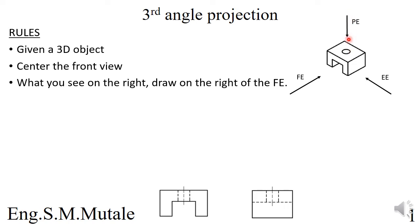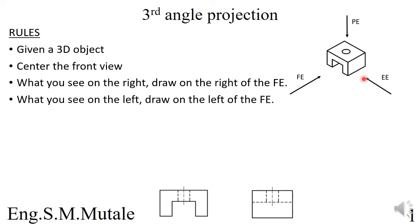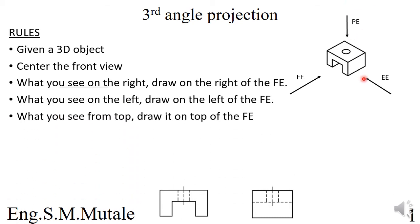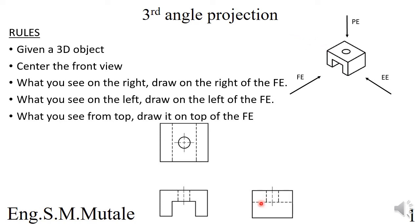The plan view, or top view — what you see on top you draw on top of the front elevation. So the plan view in third angle appears on top. Similarly, what you see on the left you draw on the left. Here the end view is on the right and there's nothing on the left, but if it were on the left, that view would appear on that side.